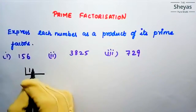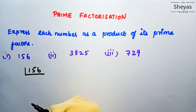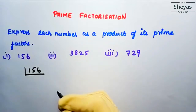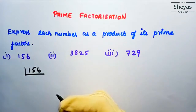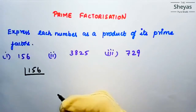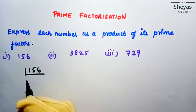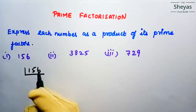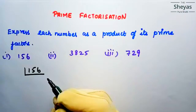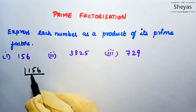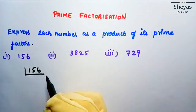Whenever you are doing prime factorization, start with the first prime number 2. Let us see whether 156 is divisible by 2 or not. If it is divisible by 2, then proceed with 2. If it is not divisible by 2, then check divisibility by 3, and if not by 3, then try 5. Now 156 ends with 6, so it is divisible by 2. So I am starting with 2.